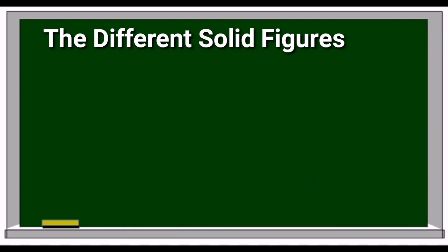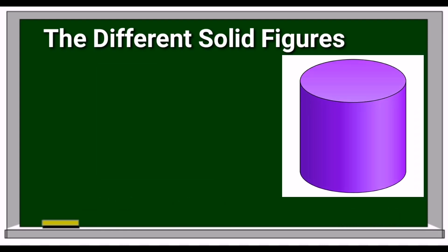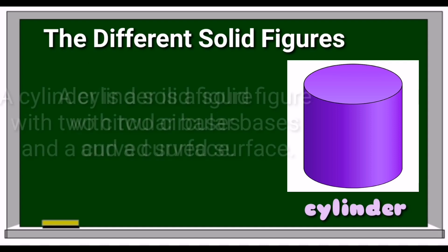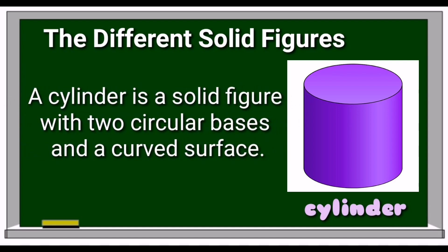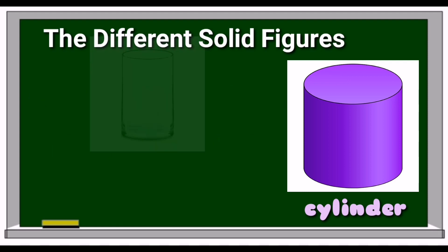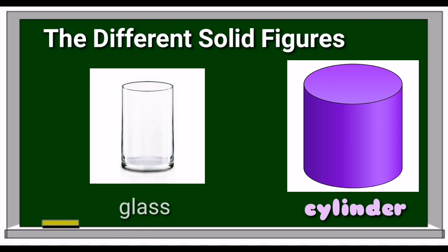The third solid figure is cylinder. A cylinder is a solid figure with two circular bases and a curved surface. An object that resembles the cylinder is a glass.